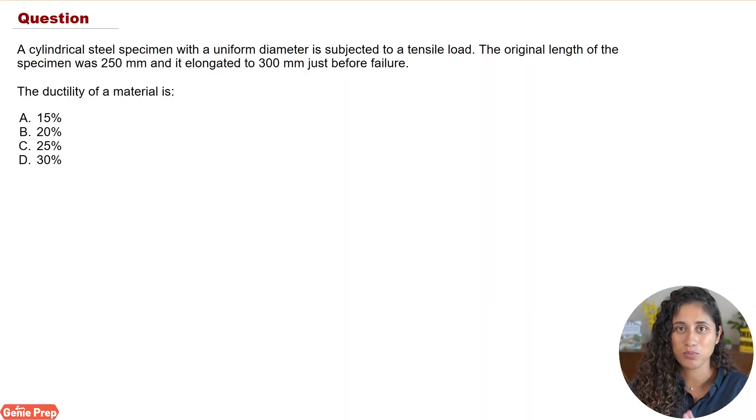Now, let's take a look at the problem. A cylindrical steel specimen with a uniform diameter is subjected to a tensile load. The original length of the specimen was 250 millimeters and it elongated to 300 millimeters just before failure. And we want to determine the ductility of a material.